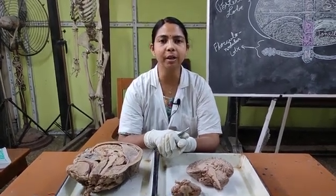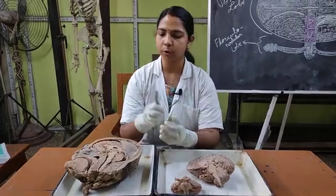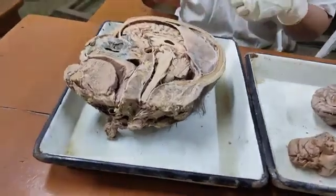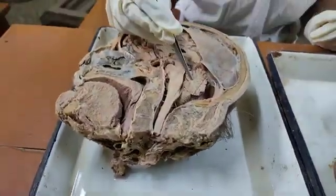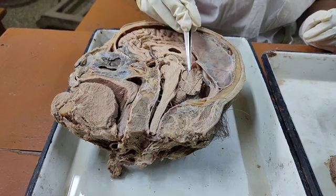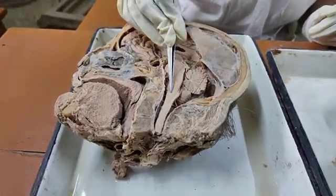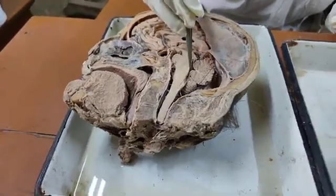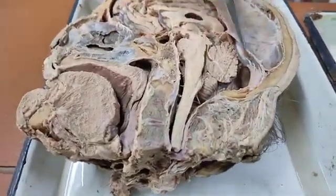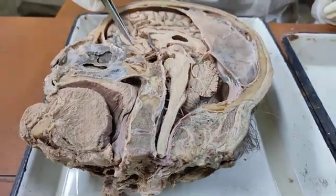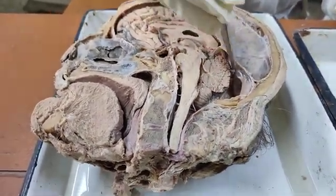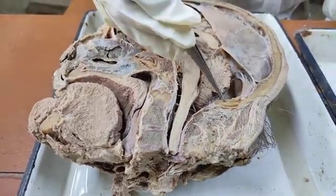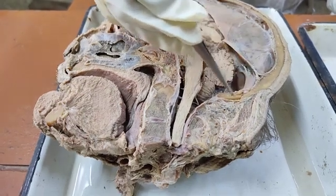The cerebellum is located in the posterior cranial fossa. This is the sagittal section of the head region. The cerebellum is located behind the pons and the medulla, and in between them lies the fourth ventricle. This is the cavity of the fourth ventricle. Superiorly, it is separated from the rest of the brain by the tentorium cerebelli. Postero-inferiorly, it is related to the squamous part of the occipital bone.